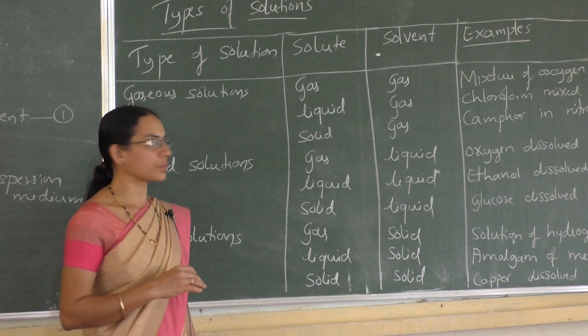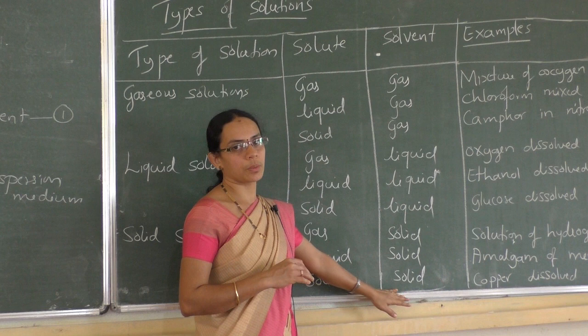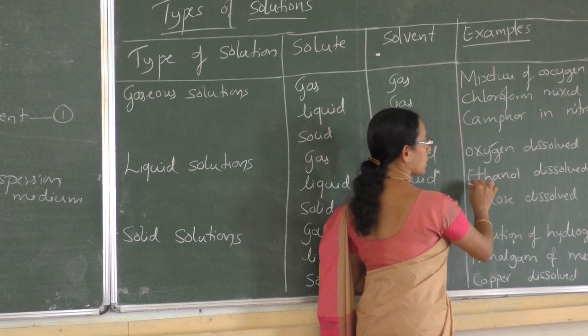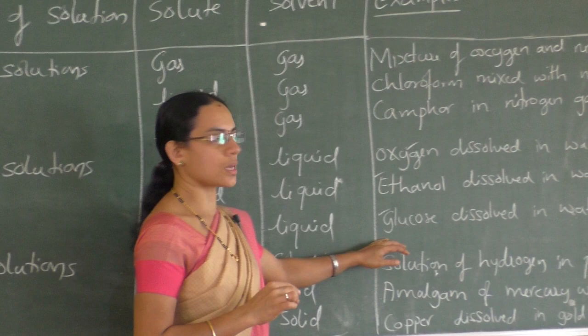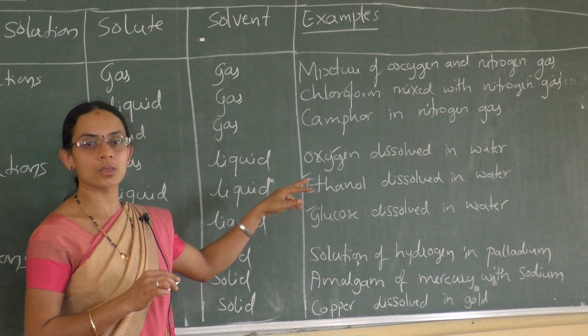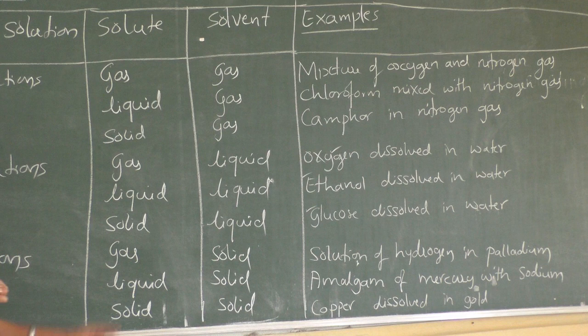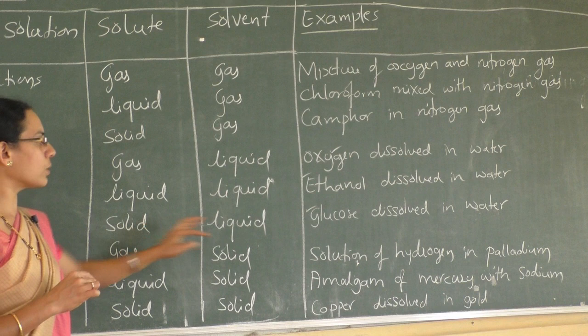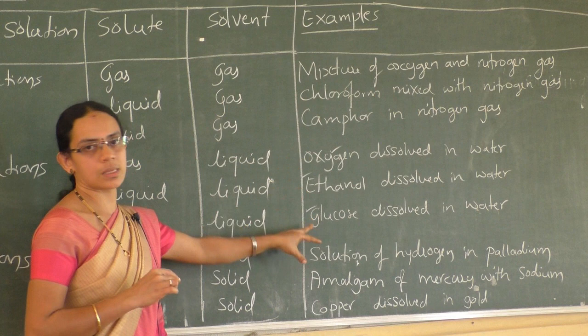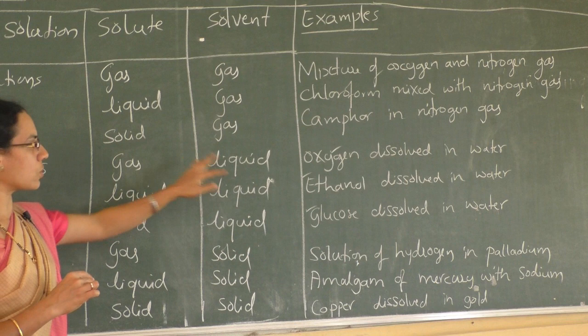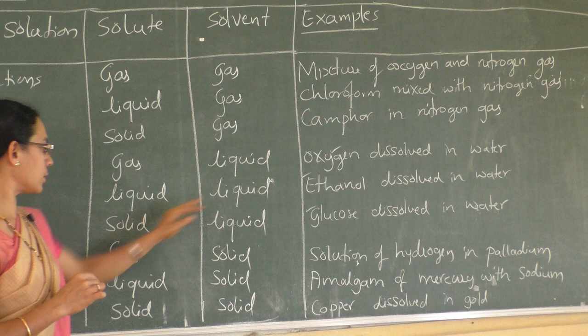Remember the familiar examples from this table: oxygen dissolved in water or carbon dioxide dissolved in water as in soda water, ethanol dissolved in liquid, and glucose dissolved in water. In this chapter, we are going to study gas dissolved in liquid, liquid dissolved in liquid, and solid dissolved in liquid.